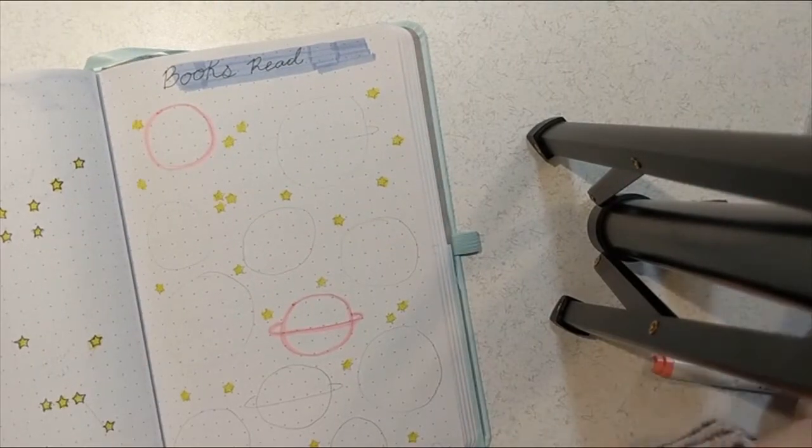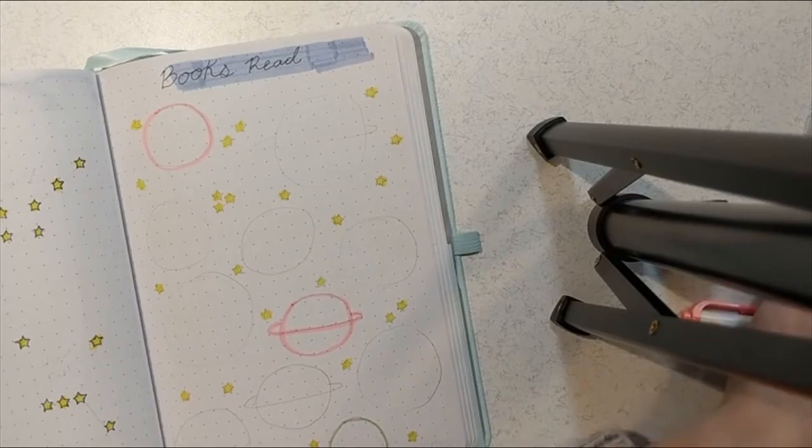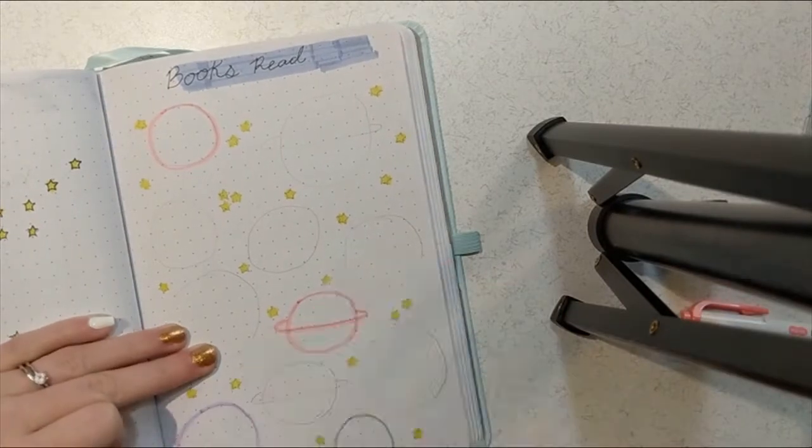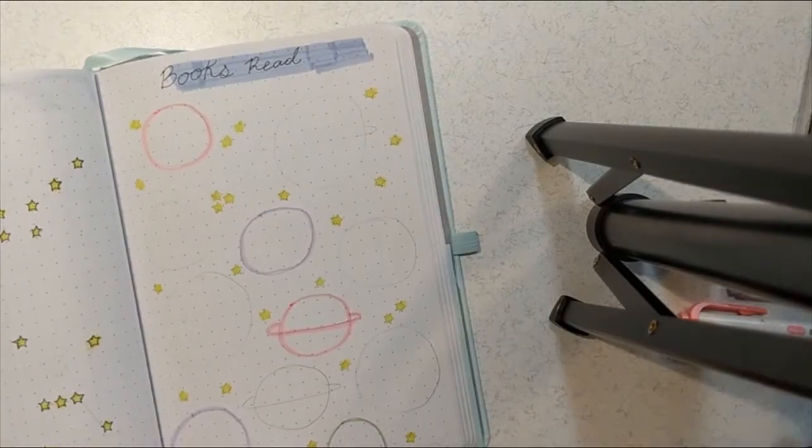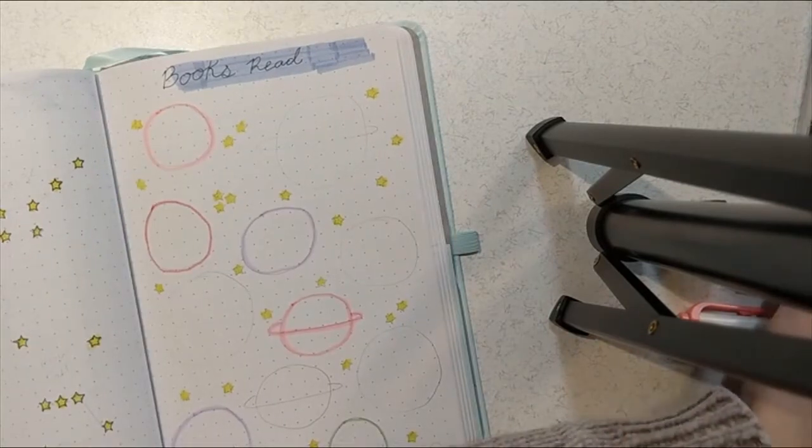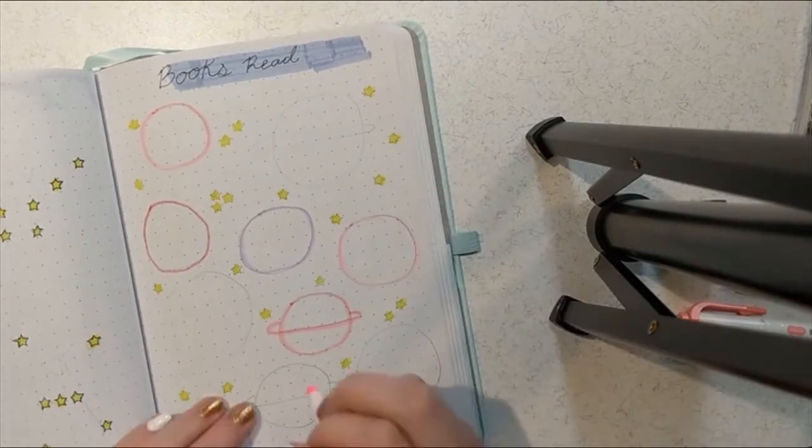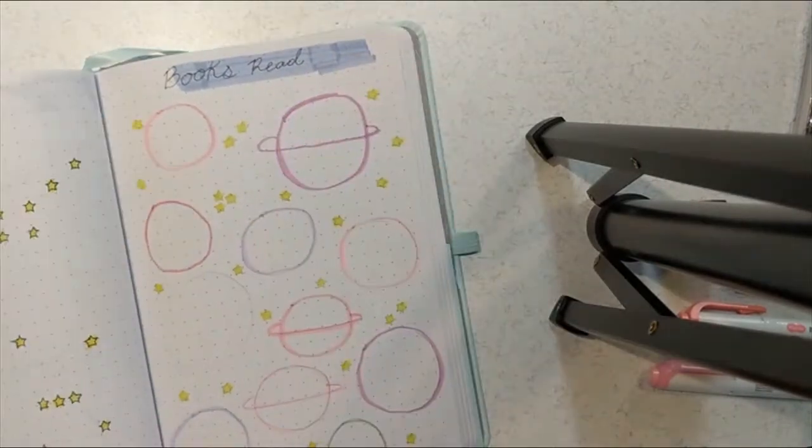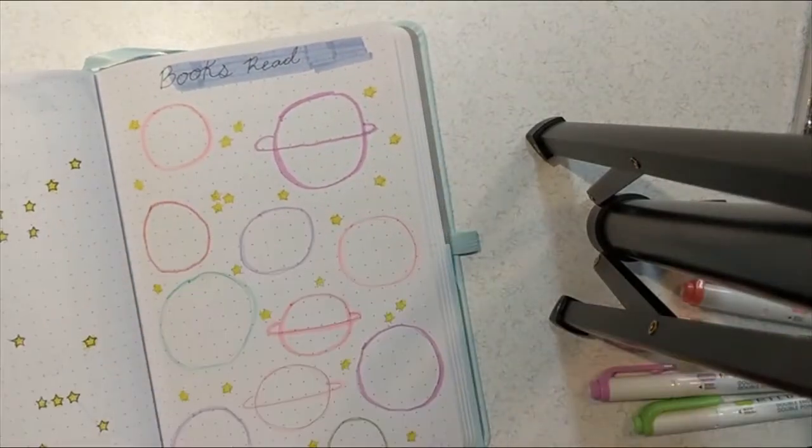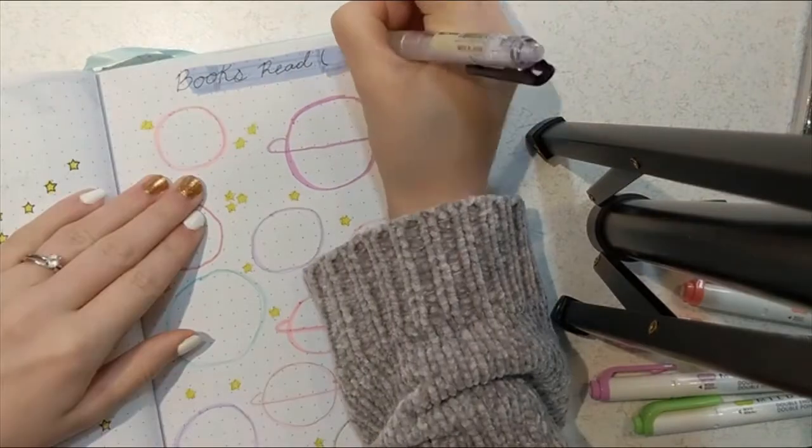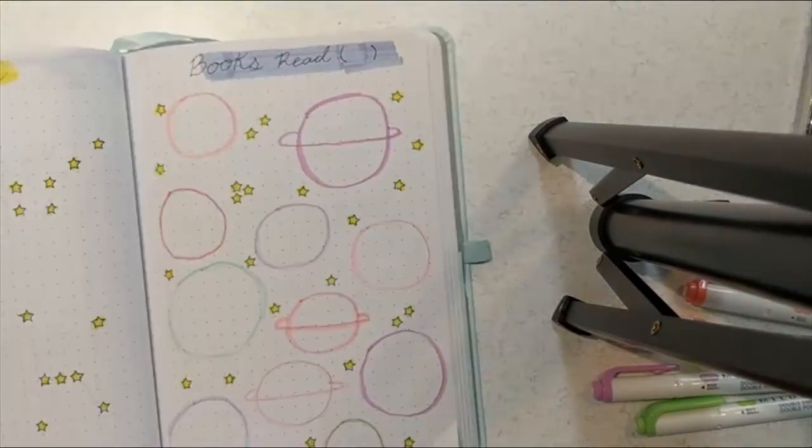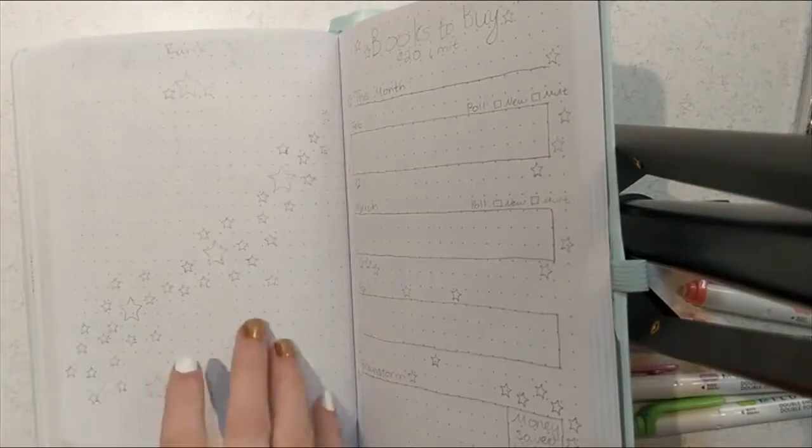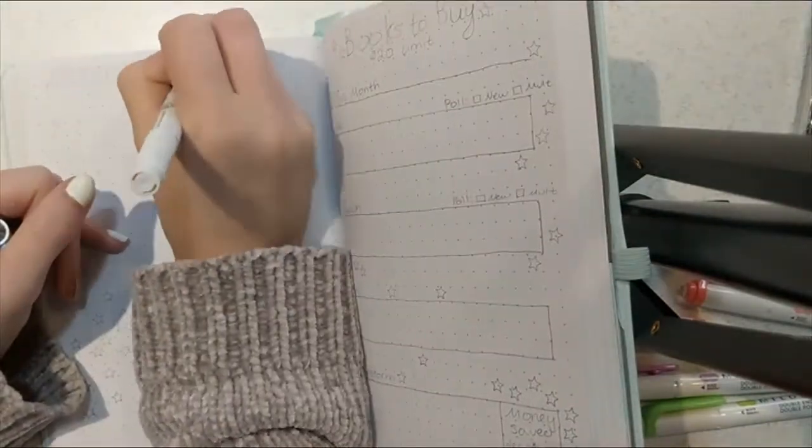Next to my TBR, I have my books read spread. I always put these side by side so I can see what I wanted to read and what I ended up reading. If I stuck to my TBR, if I read more or less books than I had hoped. But for this one, I decided to go with planets and just make it a little bit more colorful. I'm still debating on outlining them in a black marker just to make the shapes a little more apparent. But I'm just glad that it's somewhat colorful.